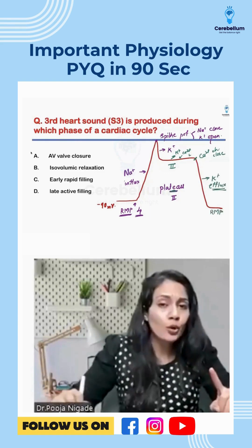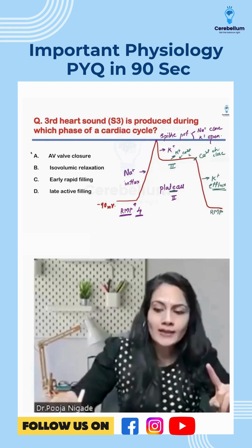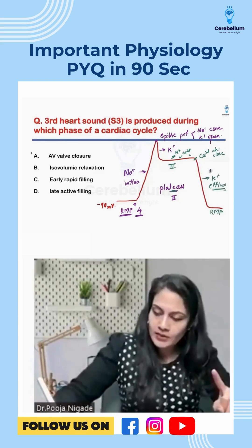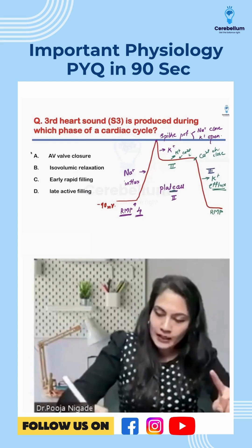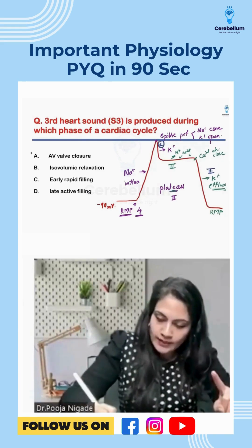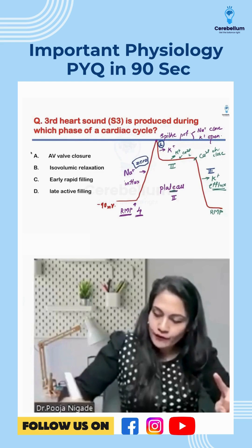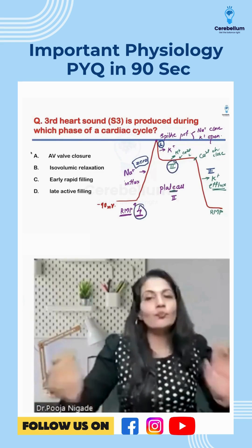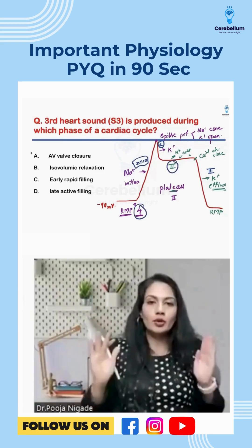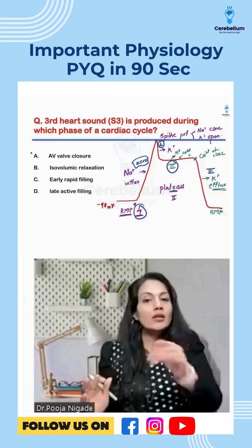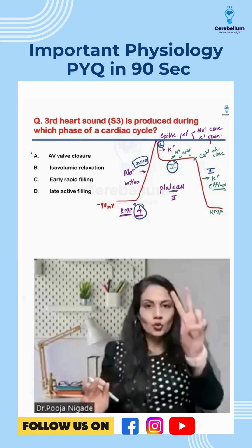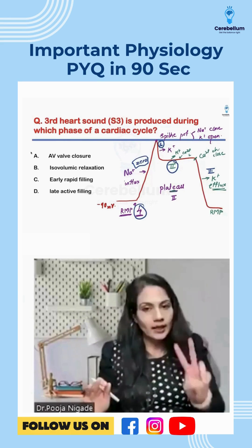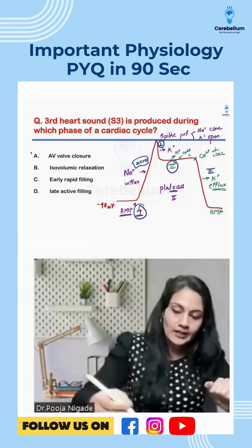Repolarization is always phase 3. Phase 0 is depolarization, phase 1 is next, phase 2 is plateau, phase 3 is repolarization, and phase 4 is RMP. When you give calcium channel blockers, they will block phase 2 — the plateau phase.